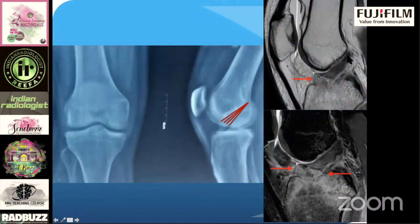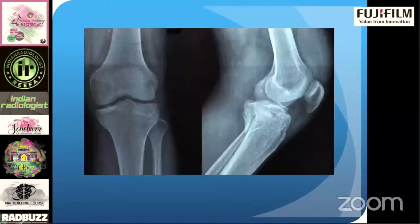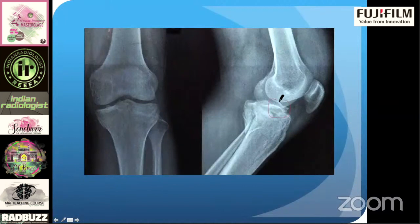Correlating with the MRI, that's your ACL and that is the avulsed bone piece. You can see there is a lot of marrow edema. This is not an obvious finding — you'll have to actually look for it. This is an anterior tibial intercondylar eminence fracture, which is essentially an anterior cruciate ligament tibial avulsion fracture. In another patient, you cannot see anything on the AP view, but on the lateral view you can clearly appreciate the fracture fragment, shifted superiorly — another patient with an ACL avulsion fracture.